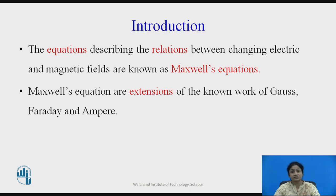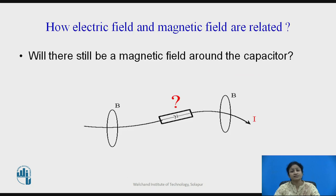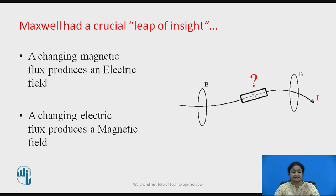What are Maxwell's equations? Maxwell's equations describe the relationship between the changing electric field and magnetic field. Maxwell's equations are the extension of the known work of Gauss, Faraday, and Ampere. It is observed by Maxwell that the changing magnetic field flux produces the electric field and changing electric flux produces the magnetic field, which are nothing but Faraday's law and Ampere's law.